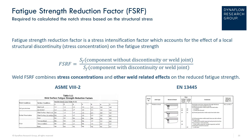The fatigue strength reduction factor is required to calculate the notch stresses based on the structural stress. It is a stress intensification factor which accounts for the effect of a local structural discontinuity, also known as a stress concentration, on the fatigue strength. Weld fatigue strength reduction factors combine stress concentration and other weld-related effects on the reduced fatigue strength. The table on the left shows typical values for the ASME section 8 division 2 code, where the fatigue strength reduction factor varies between 1 for a full penetration weld and 4 for a fillet weld.